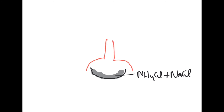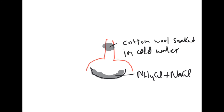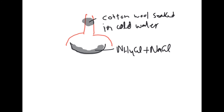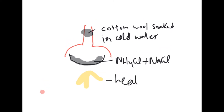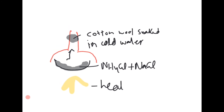For example, let's take ammonium chloride as the sublimable solid and sodium chloride as the normal solid — we have a mixture of both in a container. We place an inverted funnel on top, and we can place something to cool it down, for example cotton wool soaked in cold water on top of the funnel. We then heat from the bottom. Ammonium chloride, being sublimable, will turn into a gas; its vapors will go up, cool down in the cold water, and turn back into solid.